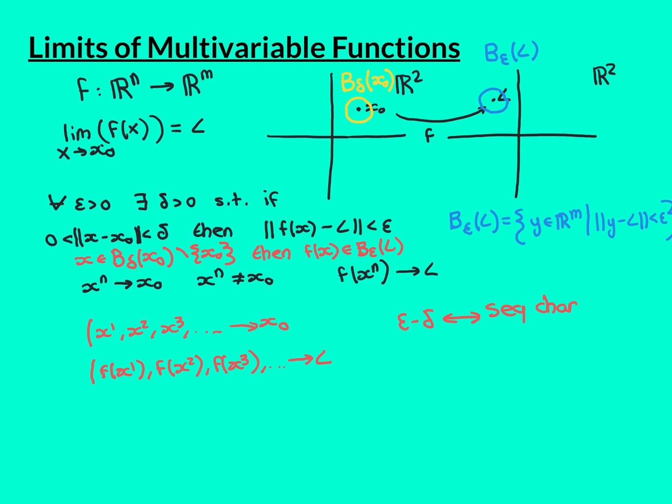Let's now do the backward direction. The backward direction is more difficult, but again it is the same argument we saw when we did limits of single variable functions. So I might just talk you through it. We start with the assumption that the sequence characterisation holds true and want to derive that the epsilon-delta definition must be satisfied.